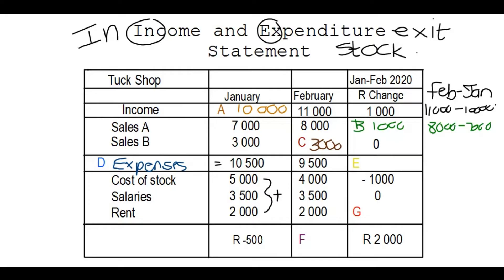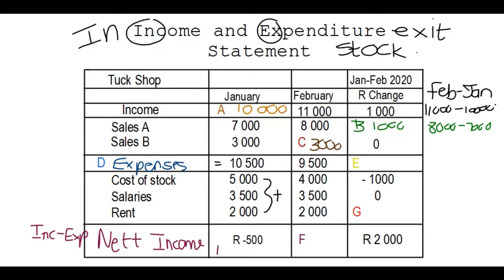Now at the bottom it says negative 500 rand. We wanted to determine the net income. Net income is your total income minus your expenses — what do you walk away with after paying everything? In January: income was 10,000 minus expenses of 10,500, so there was actually a loss. That's why there's a negative amount — January was not a good month for this tuck shop.